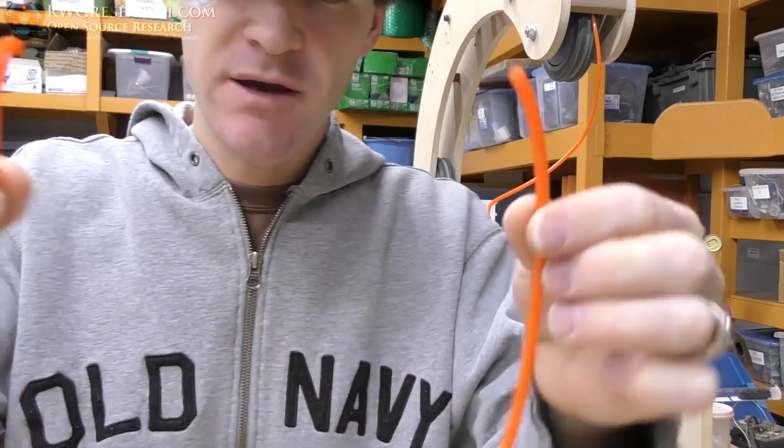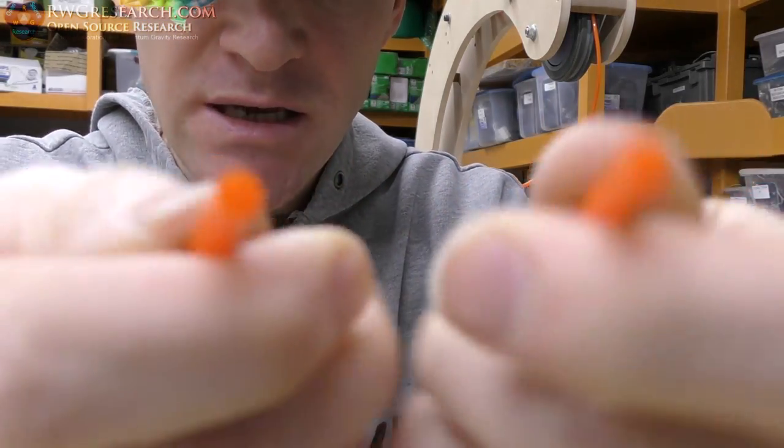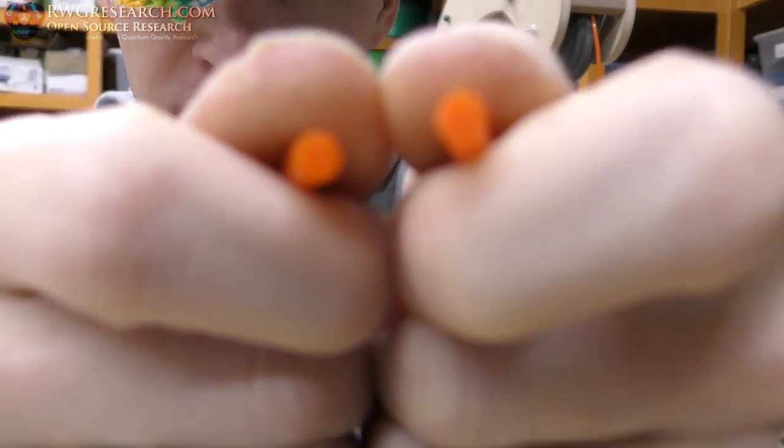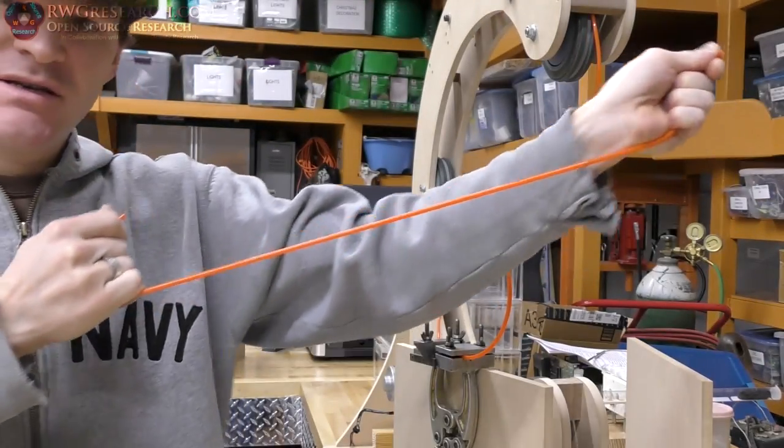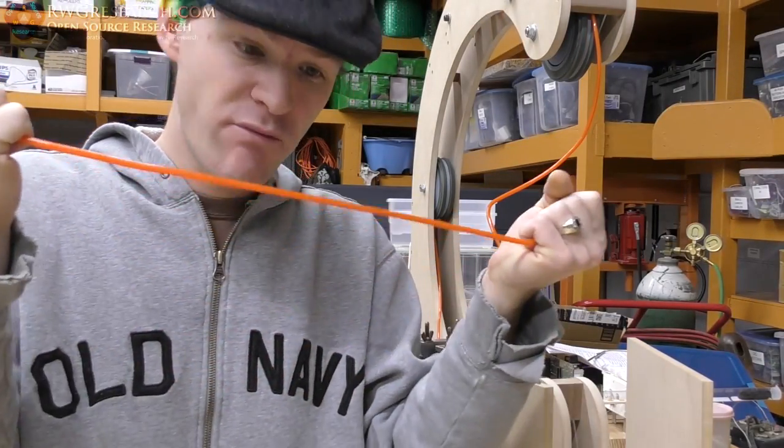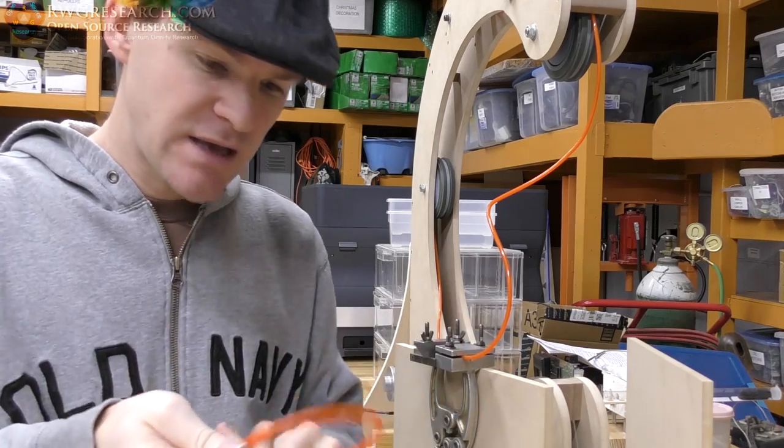This stuff is a polyurethane. This is 3-16ths diameter, and it is actually really, really tough stuff. This is considered TPU. It's the same stuff you 3D print with the TPU. It's the exact same stuff.